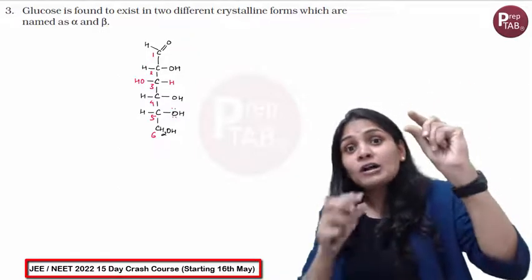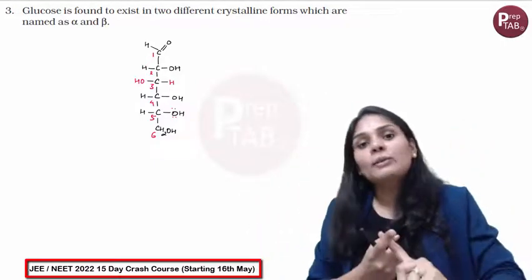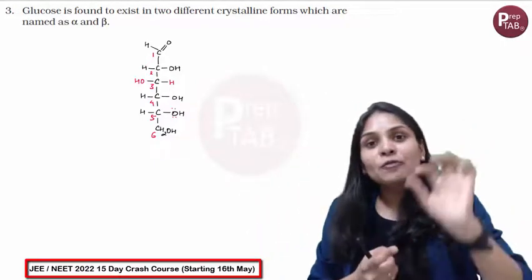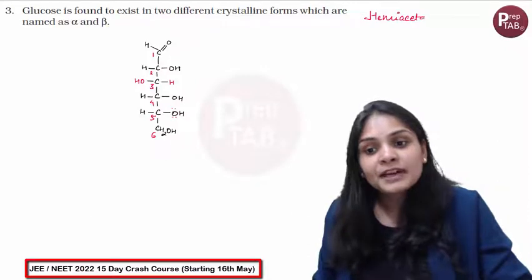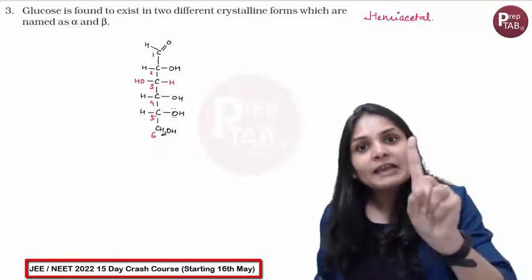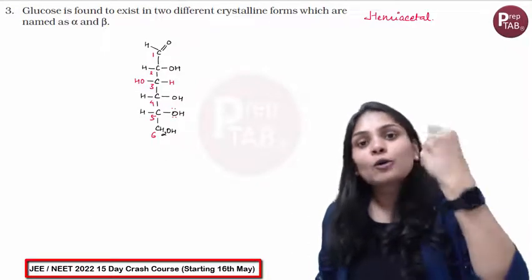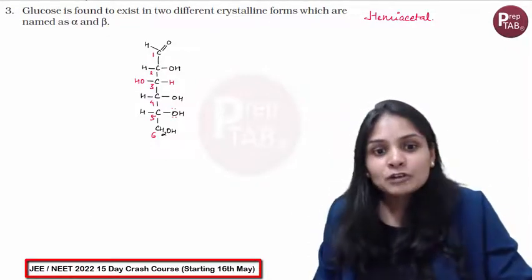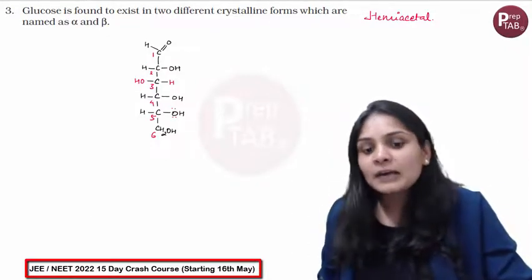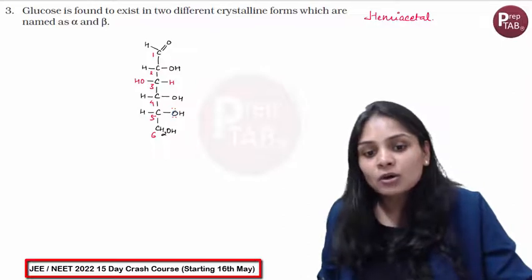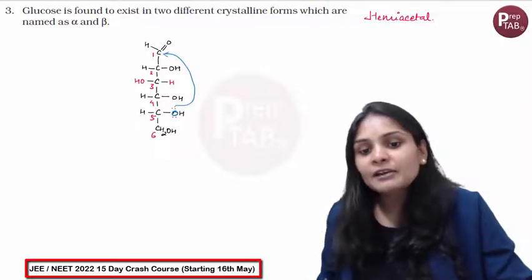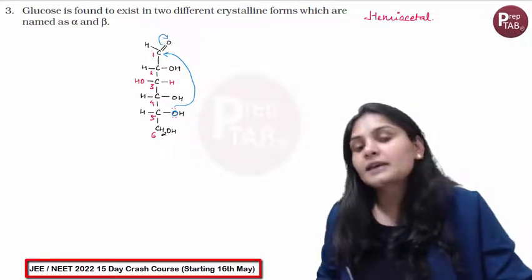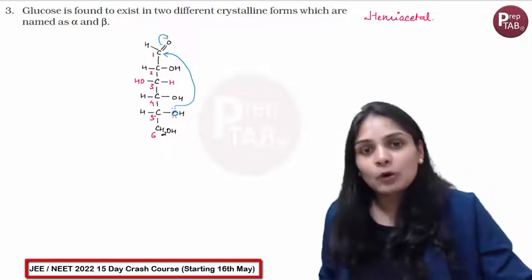So when an alcohol reacts with an aldehyde or ketone, what do you get? You get a hemiacetal. If you add one alcohol, it forms a hemiacetal. The fifth carbon oxygen attacks your aldehyde group and breaks the double bond.